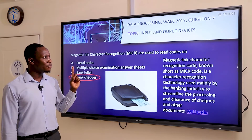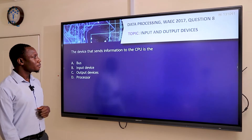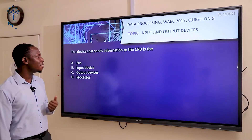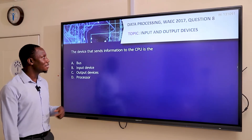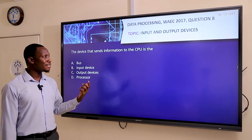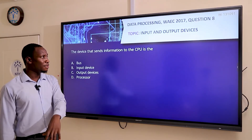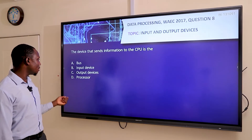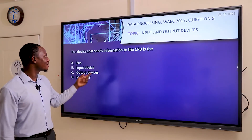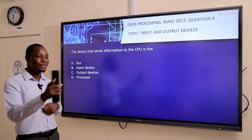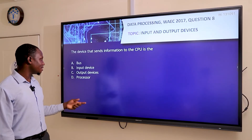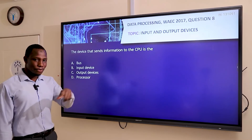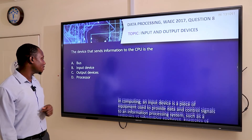I think this question was repeated in the year 2020. Moving to question eight: the device that sends information to the CPU is what? This is under input and output devices. Input devices are those that input information into the system, while output devices output information from the system. The answer here is input device, because it is sending information into the CPU. Output device, bus, and processor are all within or output from the system, so the answer is B, input device.